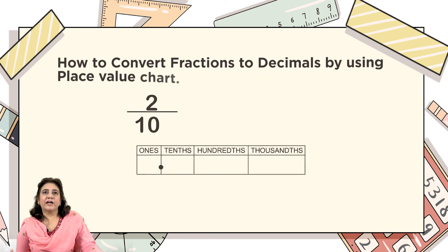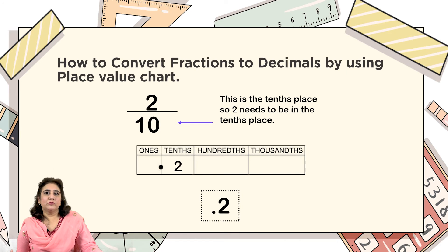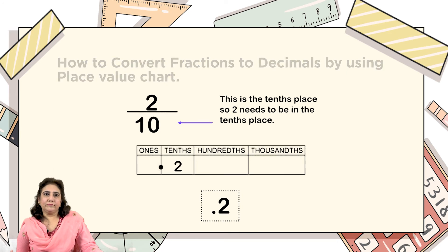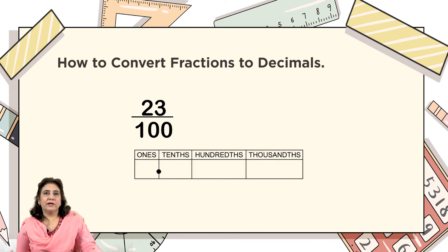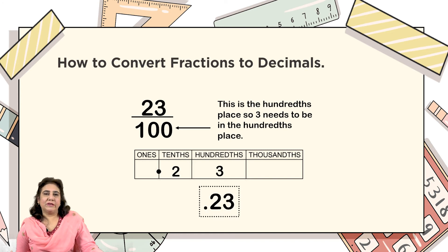How to convert fractions to decimals using a place value chart. For 2/10: this is the tenths place, so two needs to be in the tenths place — that gives 0.2. For 23/100: this is the hundredths place, so three needs to be in the hundredths place — that gives 0.23.